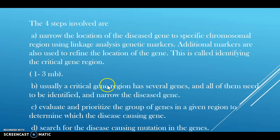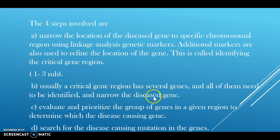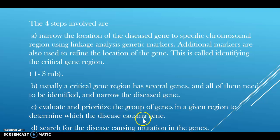Step 2: the critical gene region has several genes, and all need to be identified in order to narrow down to a single disease-causing gene. Step 3: evaluate and prioritize the group of genes in the given region to determine which is the best candidate that causes the disease — from the critical region, the required gene responsible is isolated and prioritized. Step 4: search for disease-causing mutations in the candidate genes. There may be some mutations with variation from the normal gene; that is identified, rectified, cloned, and stored in the library for further processes.